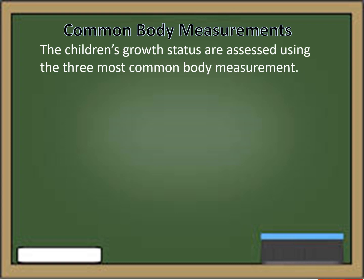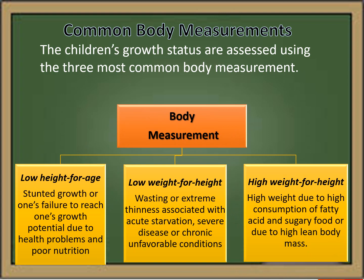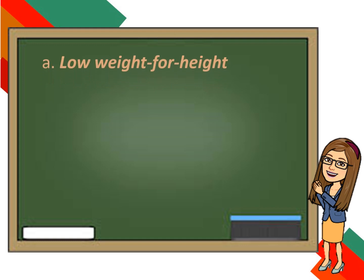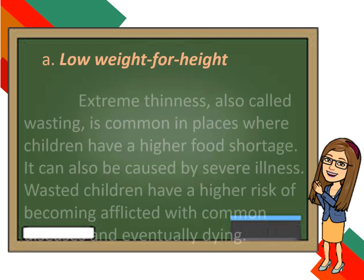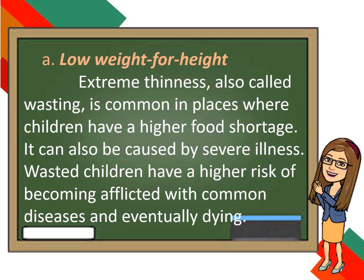Here are the common body measurements. Children's growth status is assessed using three most common body measurements: low height for age, low weight for height, and high weight for height. Low weight for height, or extreme thinness, also called wasting, is common in places where children face higher food shortage. It can also be caused by severe illness. Wasted children have a higher risk of becoming afflicted with common diseases and eventually dying.